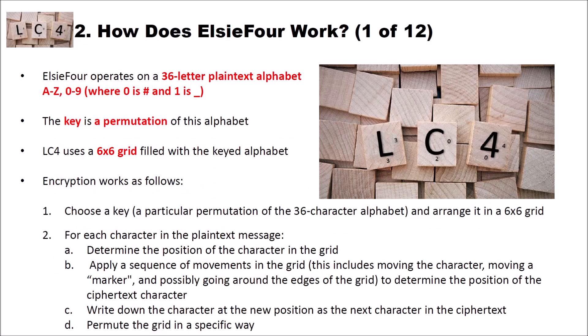How does LC4 work? LC4 operates on a 36-letter plaintext alphabet. We have the letters A to Z and the digits 0 to 9. And the key is a permutation of this alphabet. LC4 uses a 6x6 grid filled with the keyed alphabet as we will see later. Of course, at the beginning, choose a key, which is a particular permutation of the 36-character alphabet, and arrange it in a 6x6 grid.